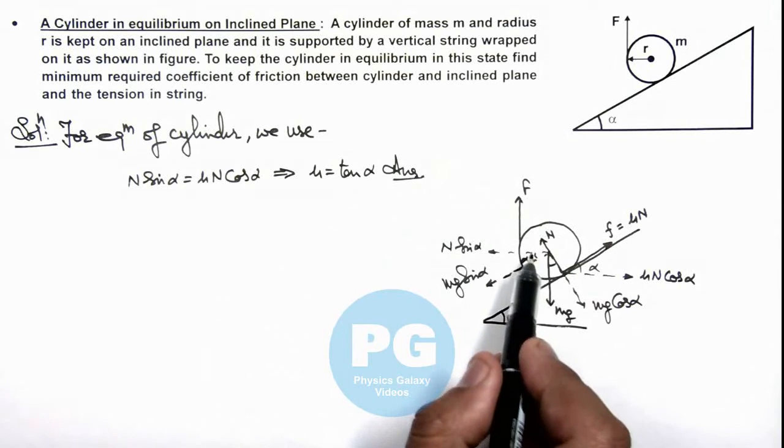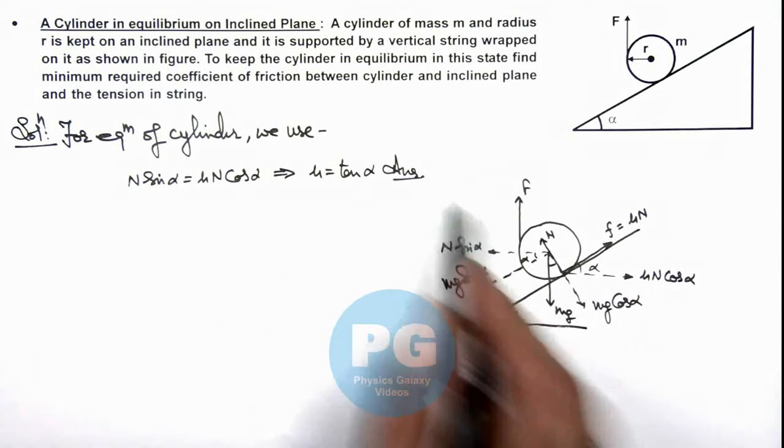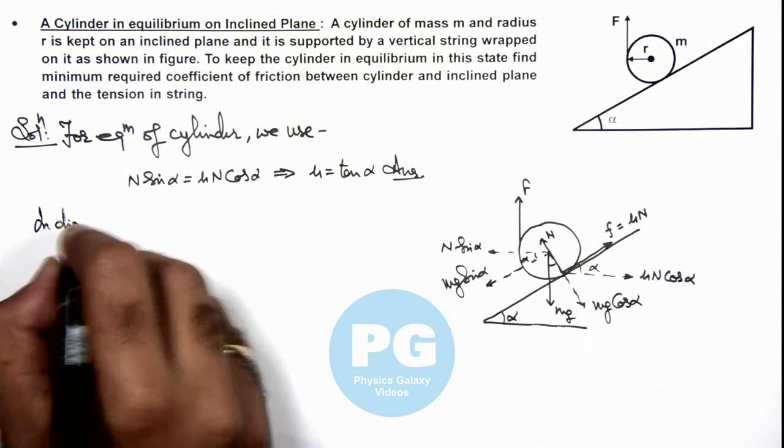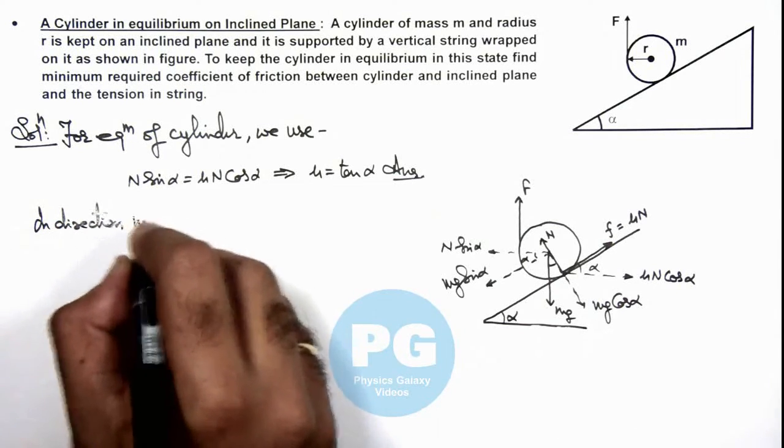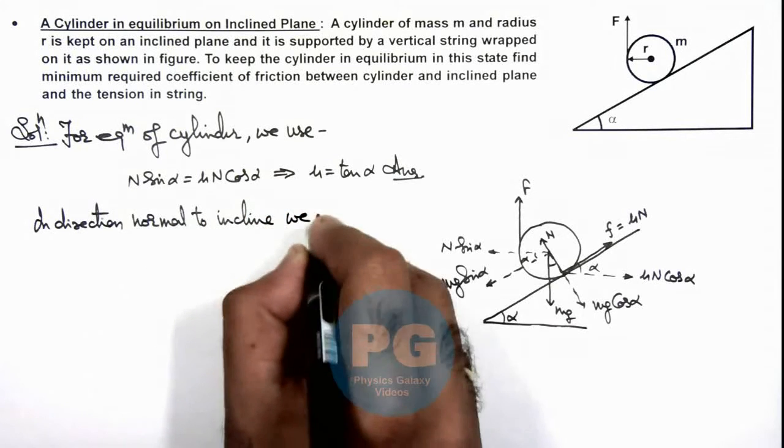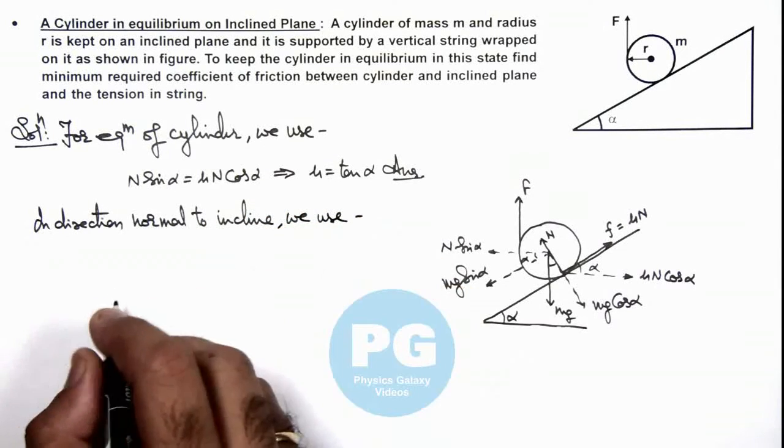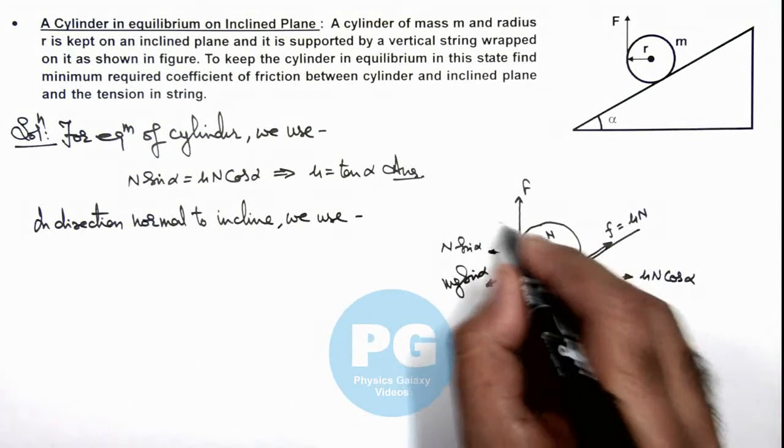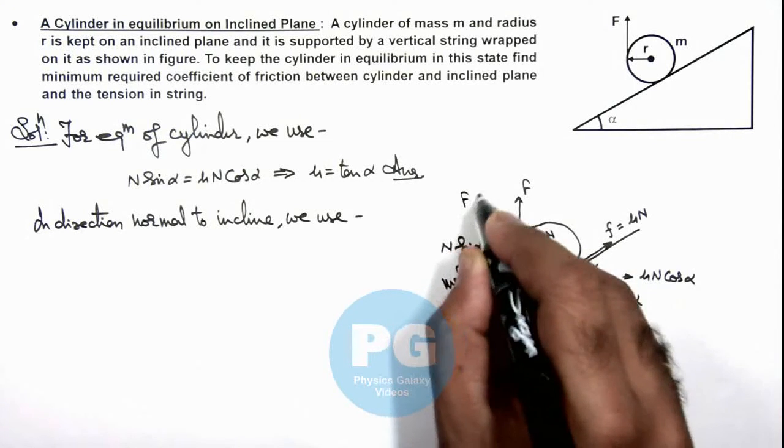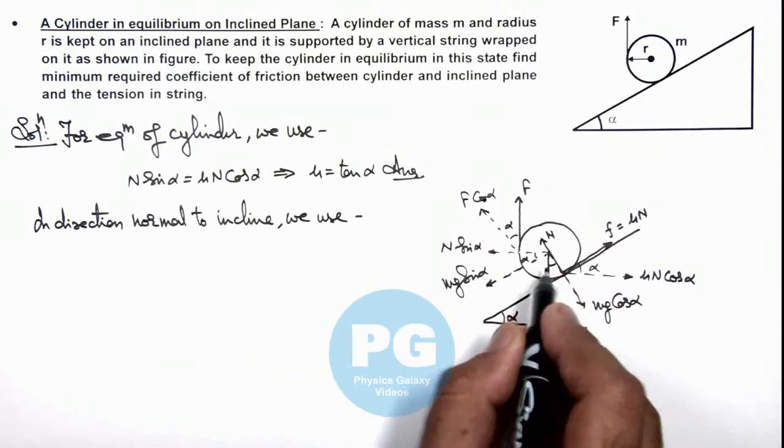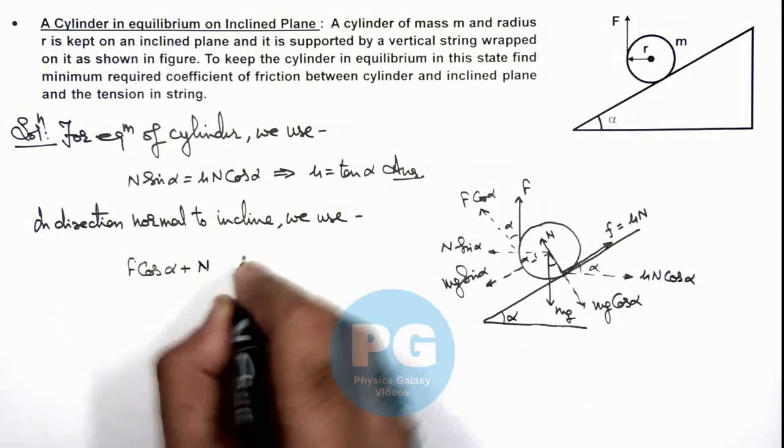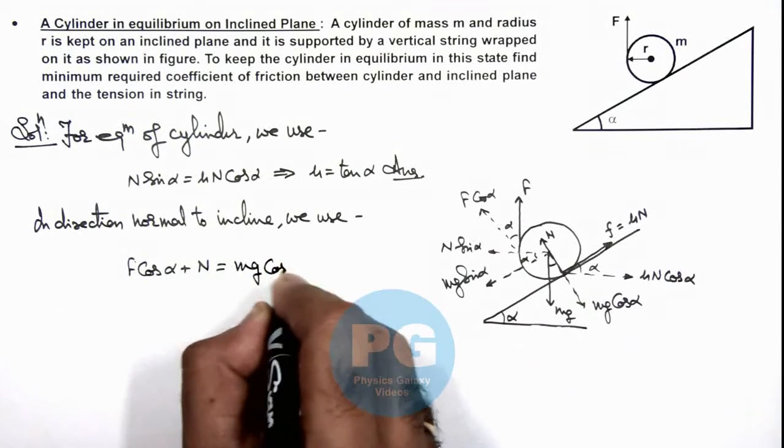And we can say it is in equilibrium, we can balance the forces in any direction. So if we write in direction normal to incline, we can see in the direction normal to incline this force is having a component F cos alpha. And we can write other components here are: F cos alpha plus N should be equal to mg cos alpha.